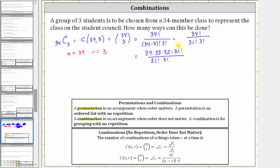Notice now we have 31 factorial divided by itself, which simplifies to 1. Now let's expand 3 factorial, which is equal to 3 times 2 times 1. So we have 34 times 33 times 32 divided by 3 times 2 times 1.